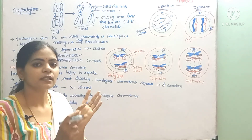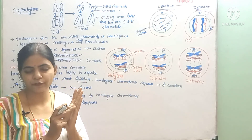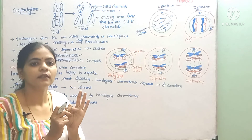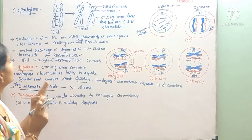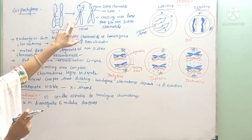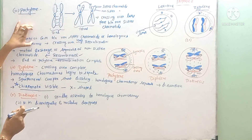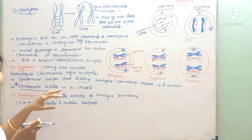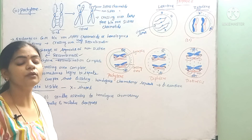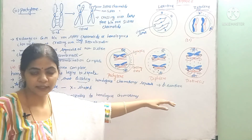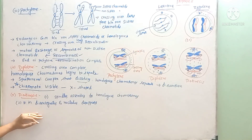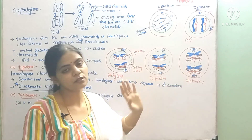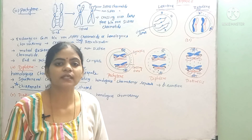To recap Prophase 1: in leptotene, chromosomes appear from chromatin. In zygotene, synapsis occurs and bivalent structures are created. In pachytene, tetrads are created and crossing over of genetic material takes place between non-sister chromatids of homologous chromosomes. In diplotene, the synaptonemal complex dissolves and separation of homologous chromosomes occurs — disjunction. In diakinesis, the nuclear membrane and nucleolus disappear, spindle fibers are generated and attach to homologous chromosomes. With this, Prophase 1 is over and the next stage is Metaphase 1.